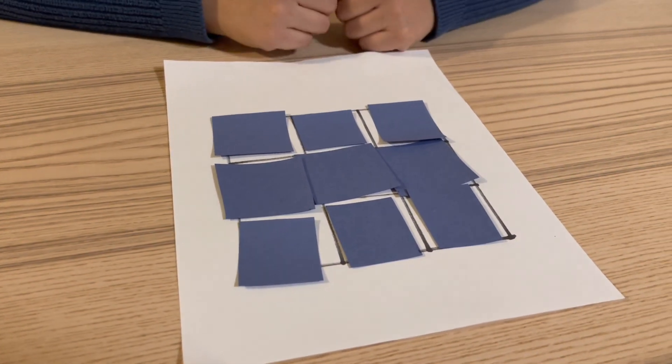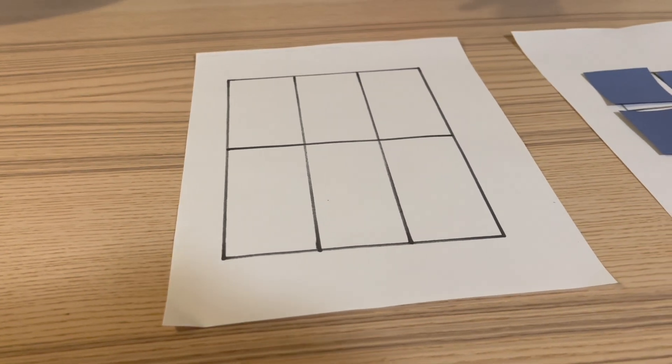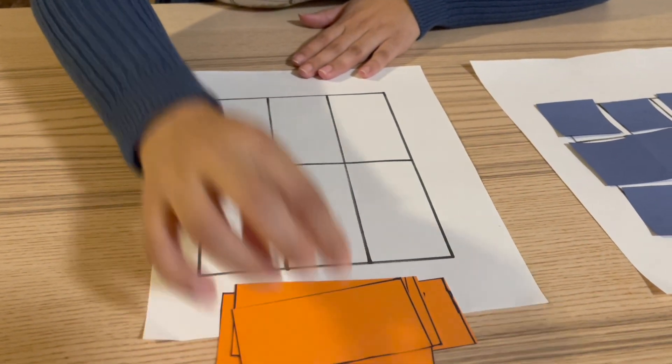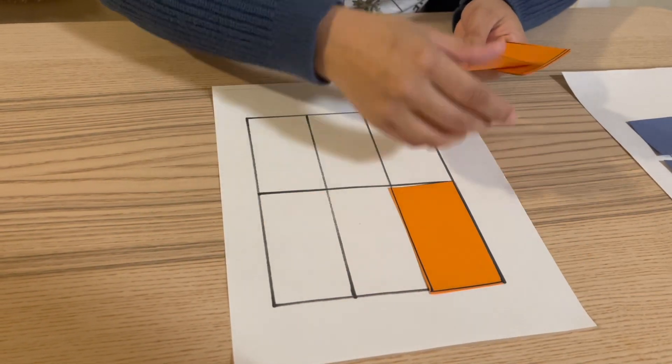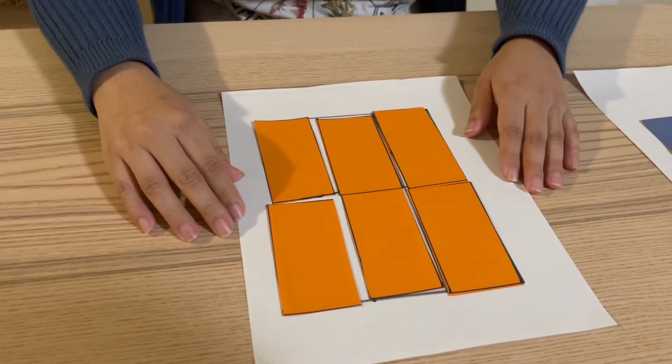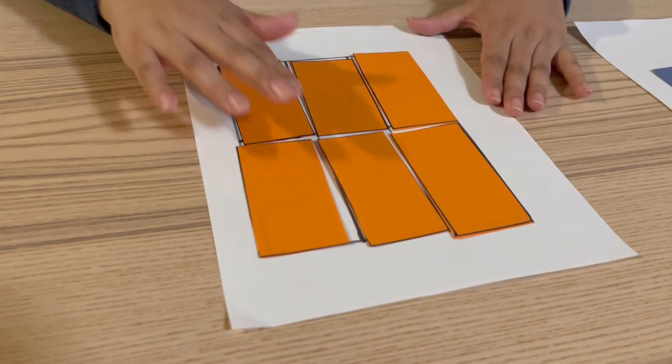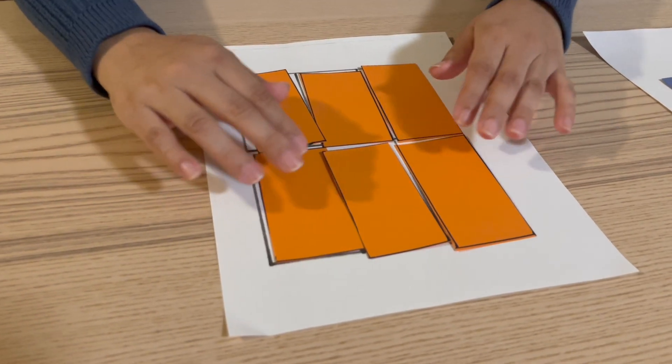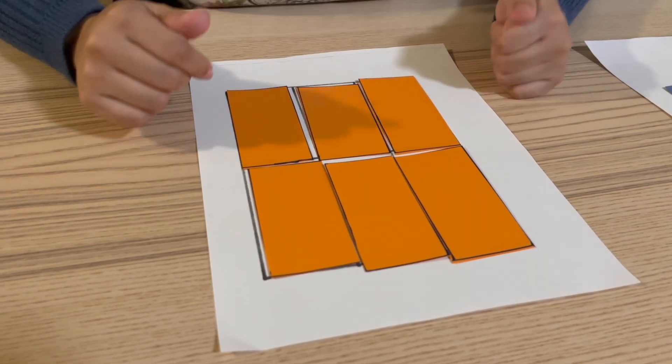We can move on to the last shape. For our last shape, provide the student with the pieces and tell them, now it's your turn to try. Once we're done filling up the rectangle, we can count the pieces and give positive praise for completing the rectangle.